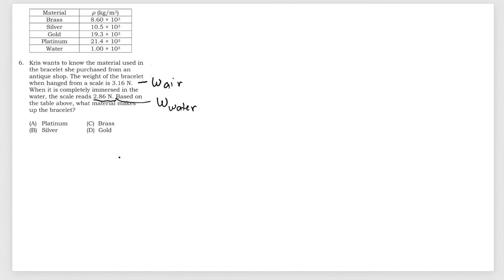Based on the table above, what material makes up the bracelet? I will use the formula of specific gravity. Specific gravity has a formula of density of the object divided by the density of water, which also has an alternative formula: weight in air divided by weight in air minus weight in water.